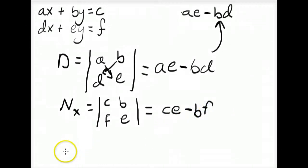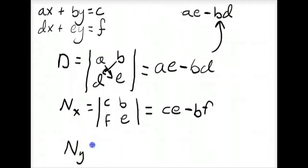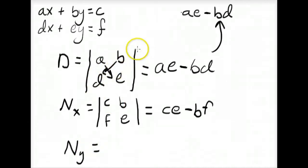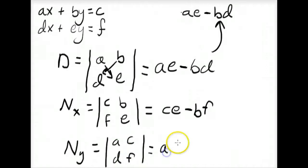Finding the numerator of the Y term: the numerator of Y does not contain Y coefficients, so we take the denominator determinant and replace the Y coefficients B and E with C and F. This gives the determinant with A, D on the left and C, F on the right, which expands to AF minus CD.